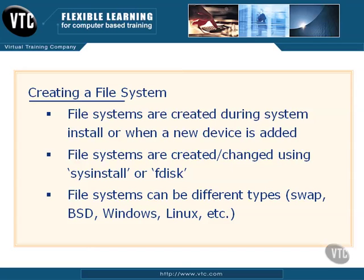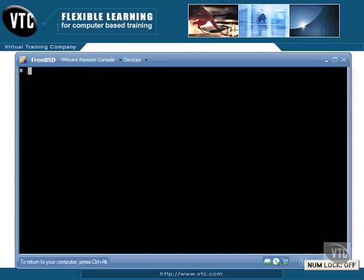There are several different file systems out there, and usually they're designated by a particular number. It's really just a matter of getting familiar with the numbers and how they're assigned to figure out which one is which when you're looking at them in these different tools. Let's go ahead and take a quick look at sysinstall and fdisk. We're in our FreeBSD virtual machine.